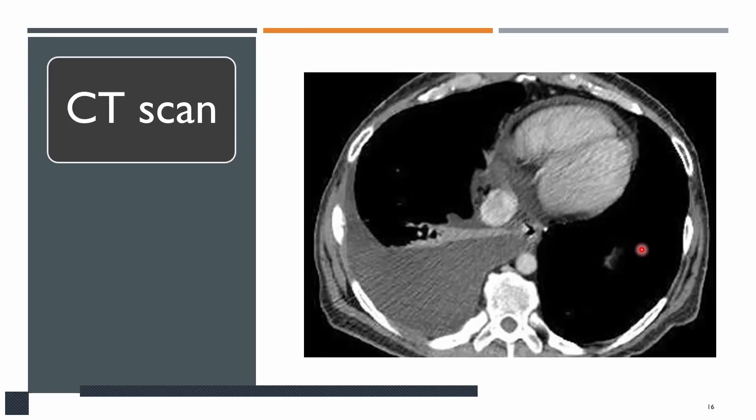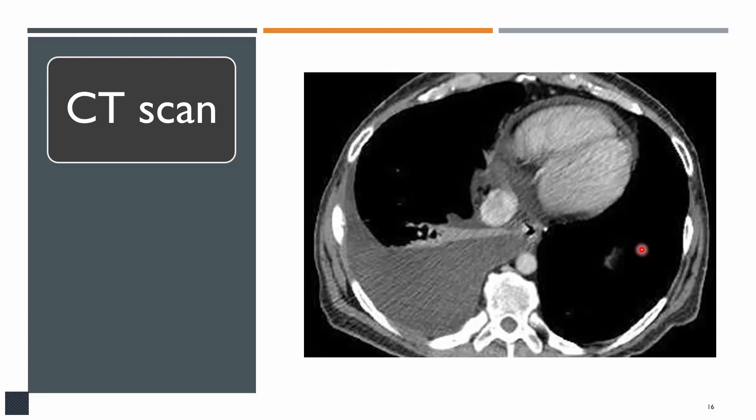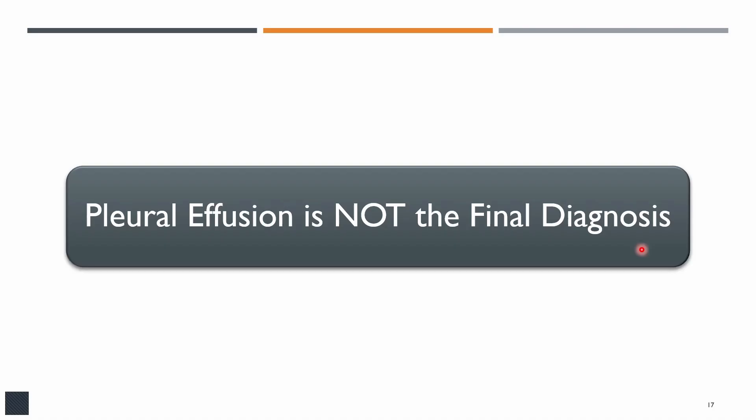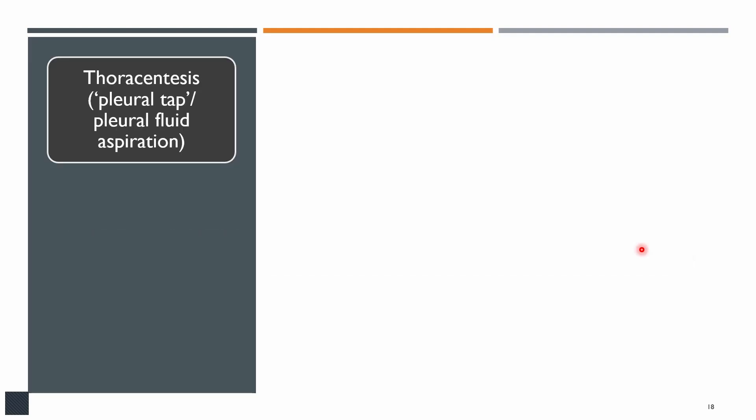The next test is CT scan. CT scan is not needed to confirm the presence of effusion, but it can help identify the cause. For example, malignancy can be picked up on CT scan, as can pleural thickening or mesothelioma. As mentioned, pleural effusion is not the final diagnosis — you have to do further workup to find the cause.